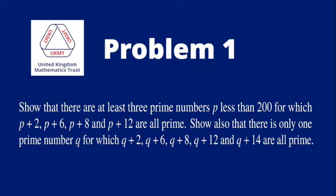Problem 1. Show that there are at least three prime numbers p less than 200, for which p plus 2, p plus 6, p plus 8, and p plus 12 are all prime.